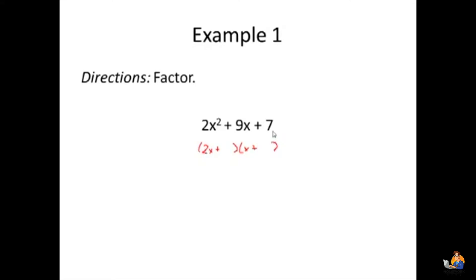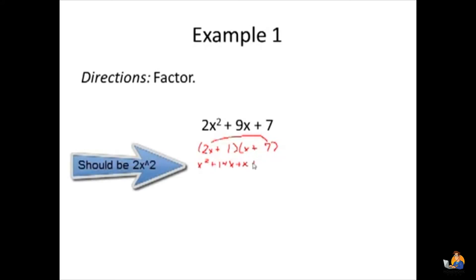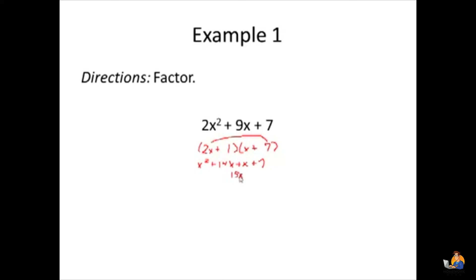Now we need to find the factors of 7. Because 7 is a prime number, its only factors are 1 and 7. I need to place 1 and 7 to make this FOIL out to 2x squared plus 9x plus 7. If I put 7 here and 1 here and FOIL, I get 2x squared, then 14x, then 1x, and 7. But the middle terms combine to give 15x, not 9x, so that's not what we want.